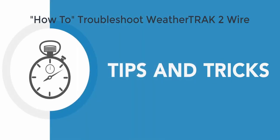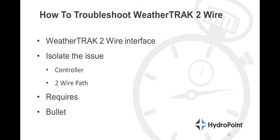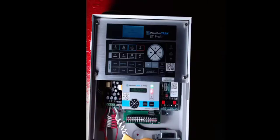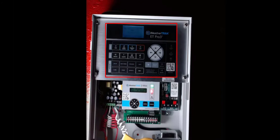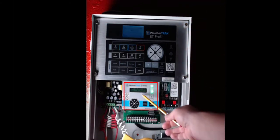How to Troubleshoot WeatherTrack 2-Wire. The first step in troubleshooting the WeatherTrack 2-Wire is being able to identify when you have a 2-Wire issue. To do this we need to first disqualify any WeatherTrack controller issues. The WeatherTrack interface manages many things including all the scheduling information and other WeatherTrack feature specific information. So if there is an issue, the first thing to do is identify where the issue lies — is it a WeatherTrack issue you can see online, or does it use our 2-Wire specific interface?